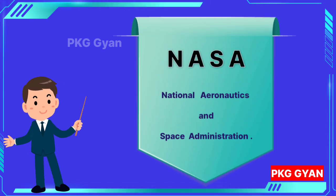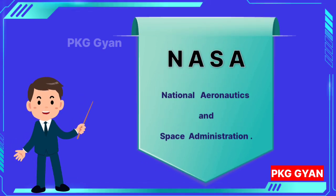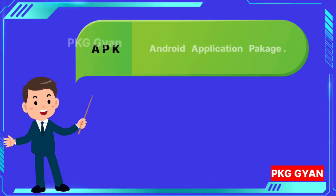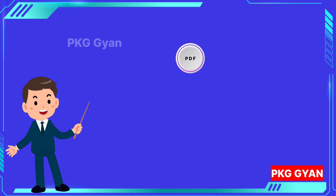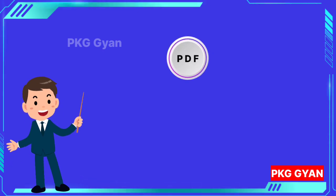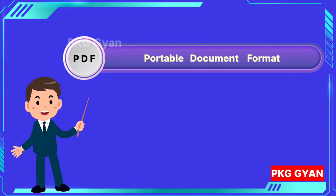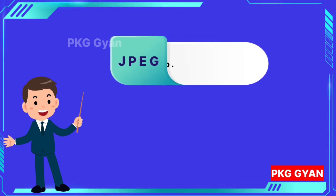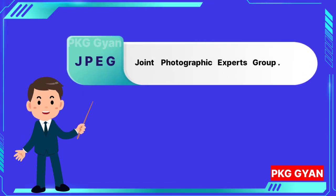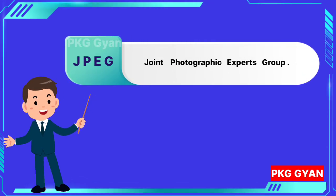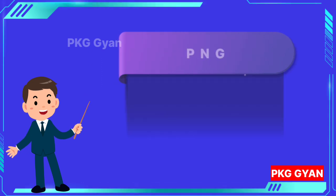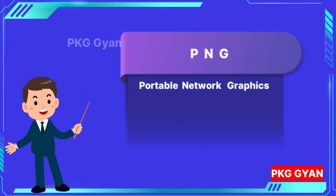APK: Android Application Package. PDF: Portable Document Format. JPEG: Joint Photographic Experts Group. PNG: Portable Network Graphics.